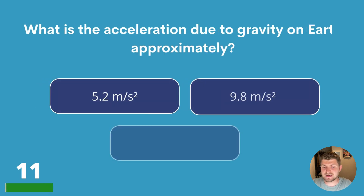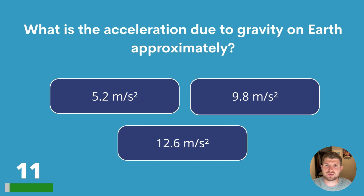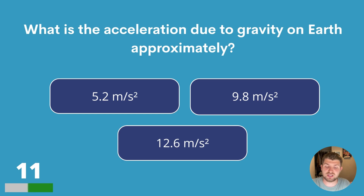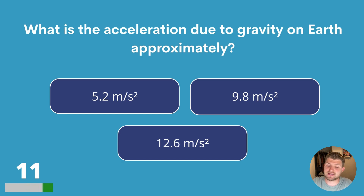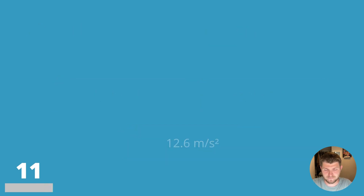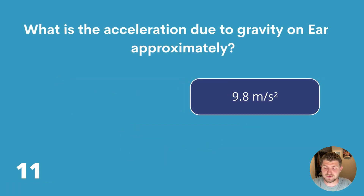Question eleven. What is the acceleration due to gravity on Earth approximately? 5.2 m/s², 9.8 m/s² or 12.6 m/s²? The answer is 9.8.